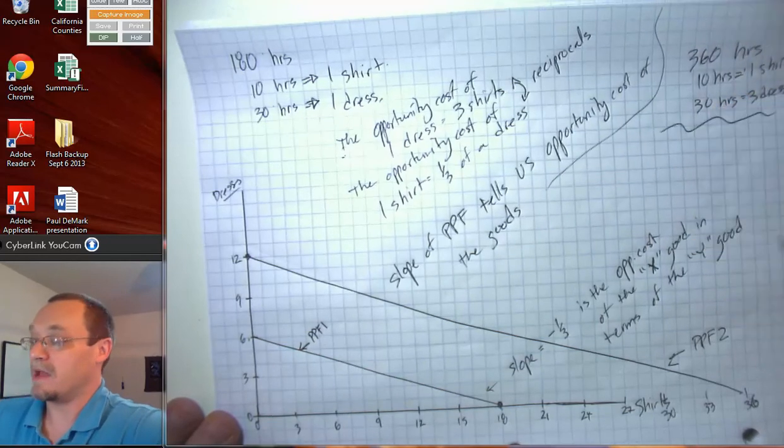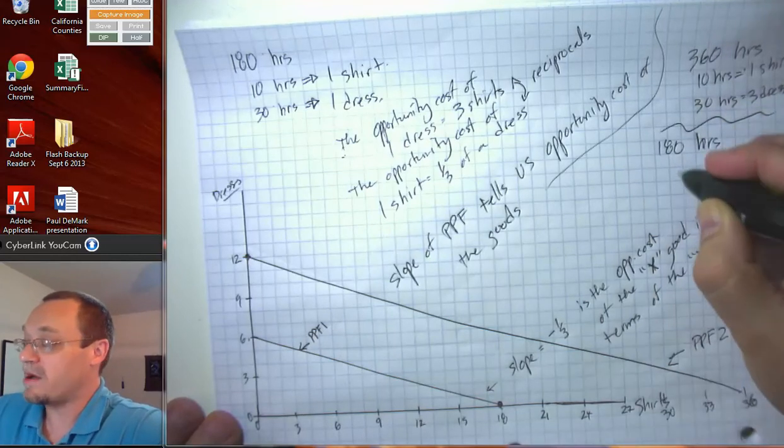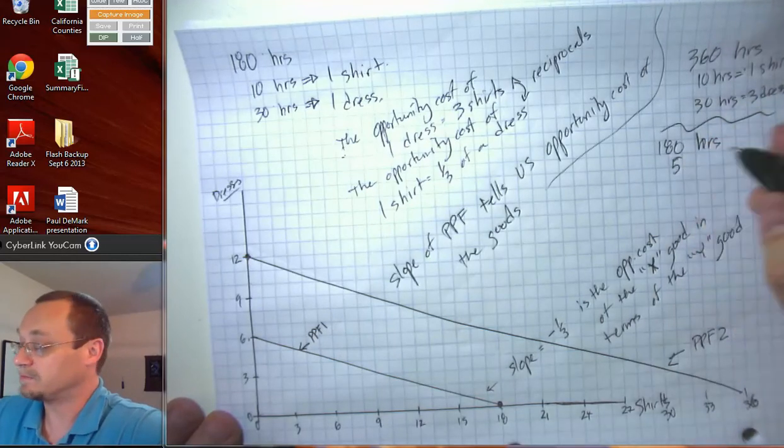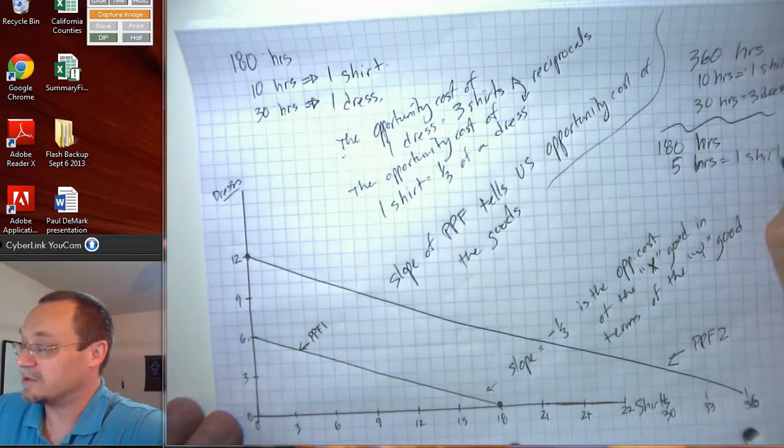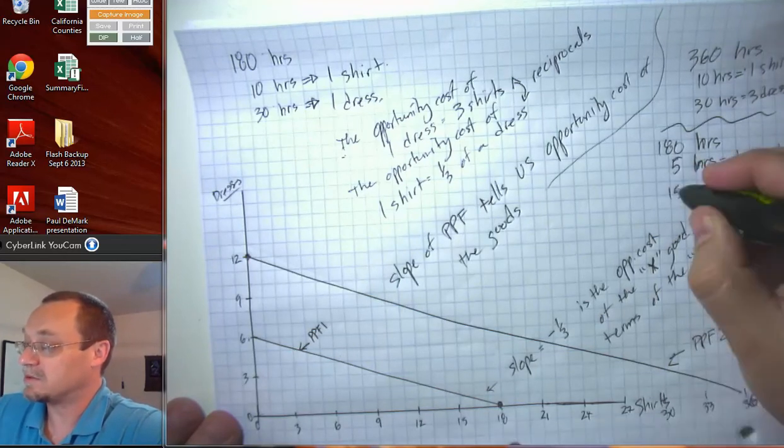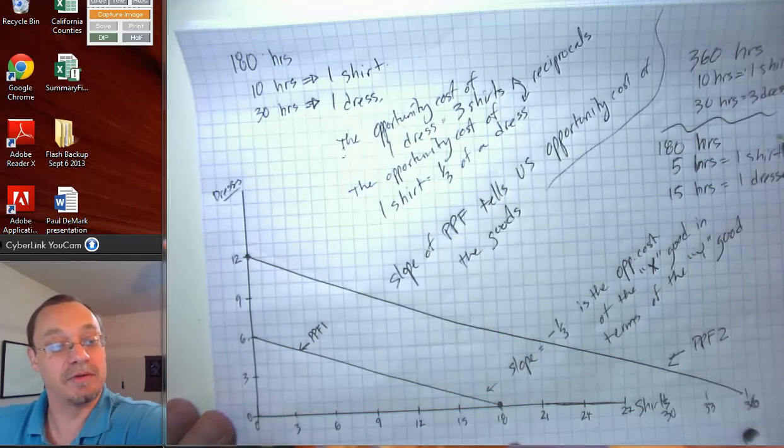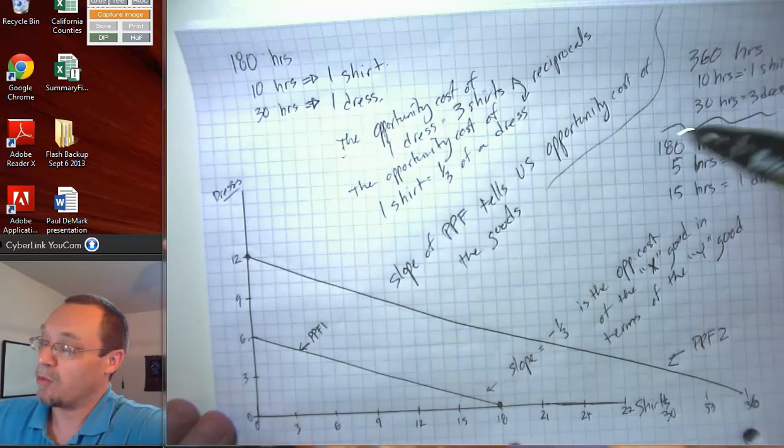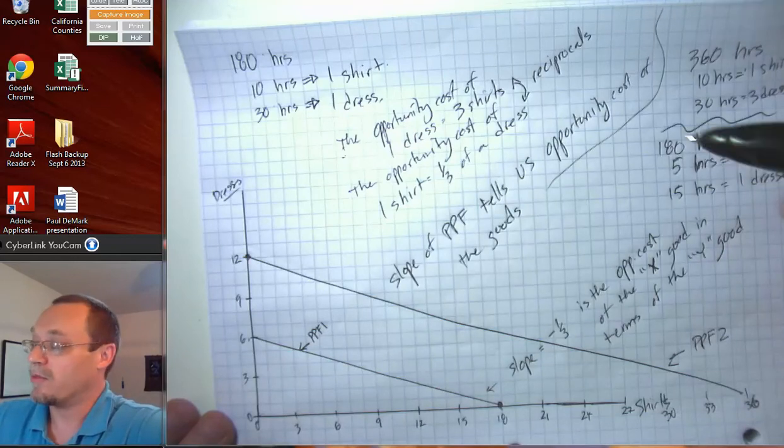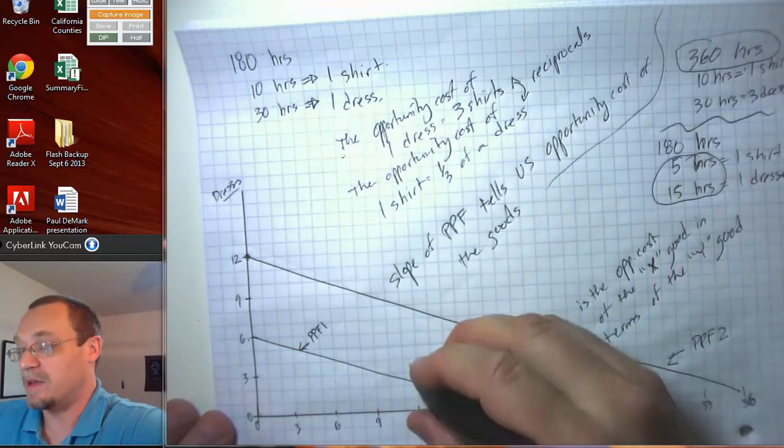A second way would be if we had 180 hours available still, but our labor productivity doubled. If we had five hours per shirt and 15 hours per dress. So, and it's kind of obvious to say it, but there's two different ways to increase productivity or increase total production, excuse me. We can either work more or we can work smarter and more efficiently. So, either of those ways will lead the PPF to shift out.